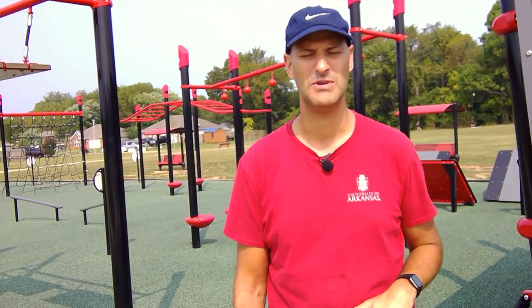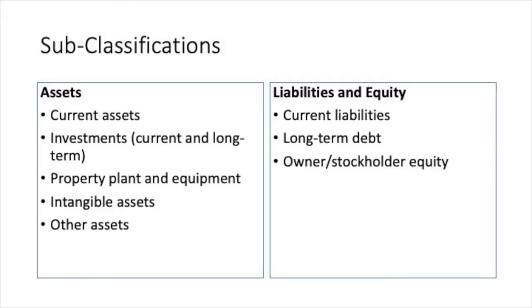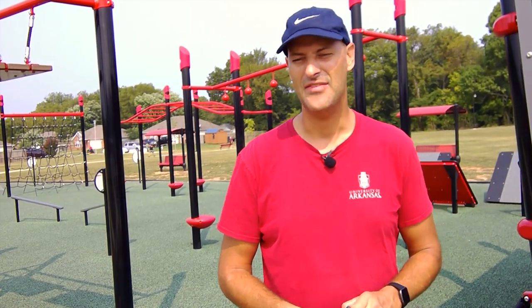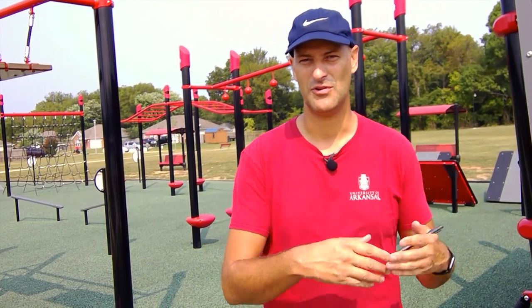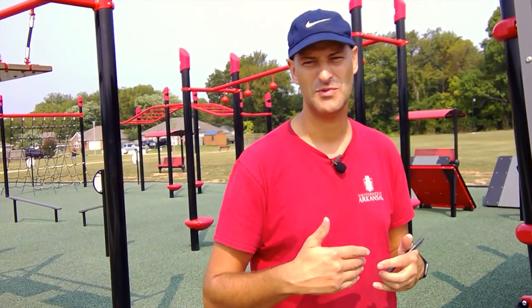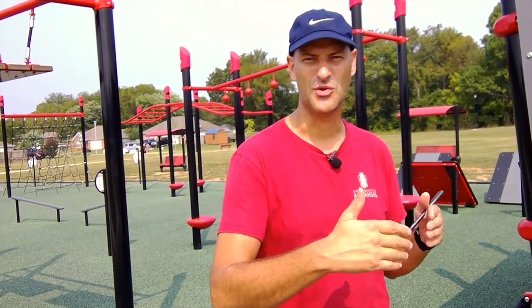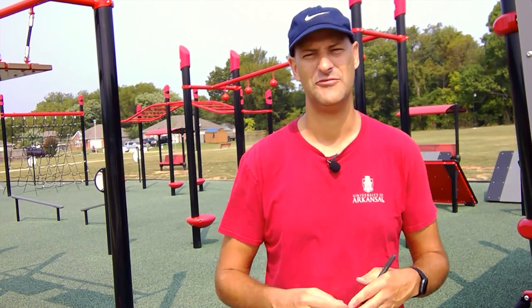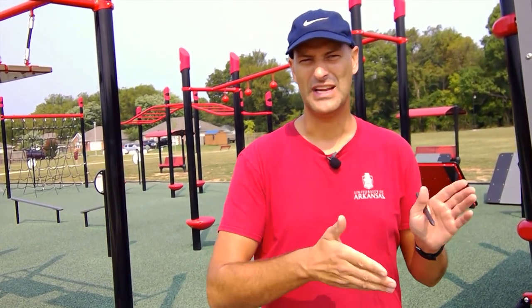Drilling into the classifications within assets: some investments may be shorter-term, so you can have current investments and long-term investments. Property, plant, and equipment is always a long-term asset. Intangible assets and other assets round out the long-term section. Typically, assets and liabilities are listed in order of liquidity — that's why cash is essentially always first on a balance sheet, followed by accounts receivable, then inventory. The idea is cash is already cash; inventory has to become accounts receivable first, then gets collected.